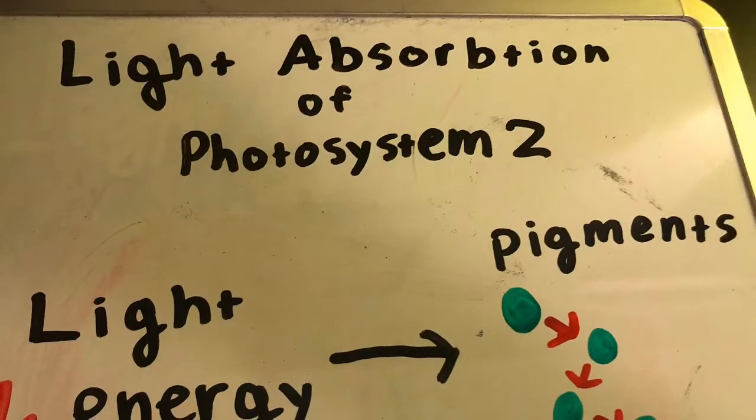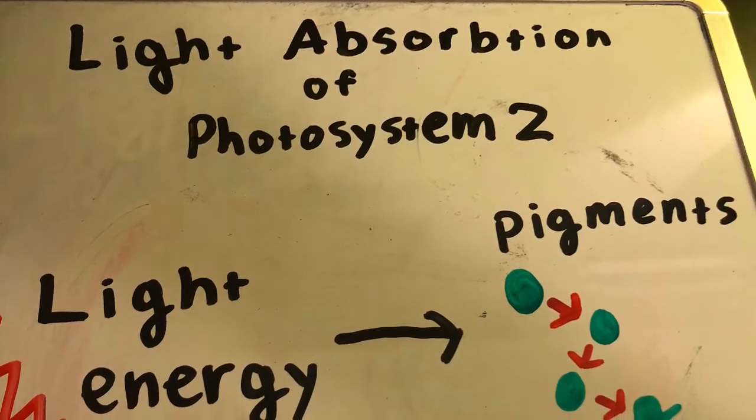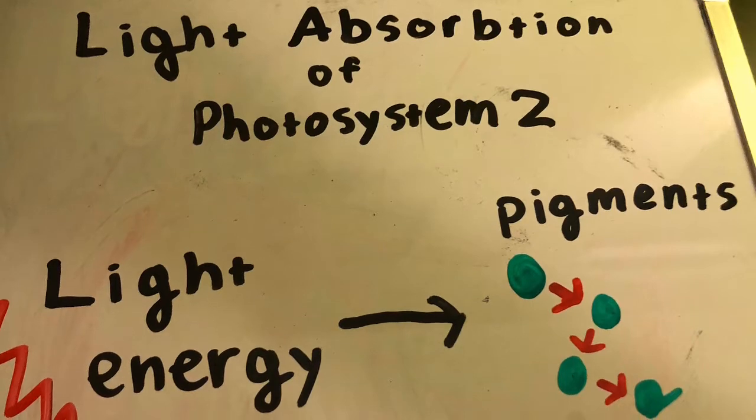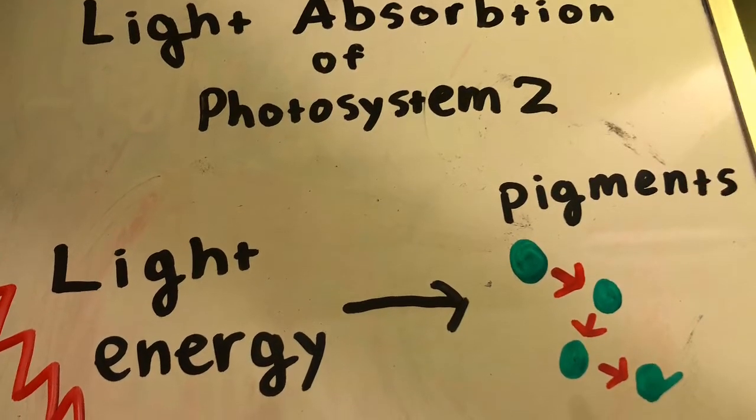During the first part of the light reaction process, which is the light absorption of photosystem II, the light energy from the sun is absorbed by one of the many pigments in photosystem II, where the energy is passed inward from pigment to pigment until it reaches the reaction core.